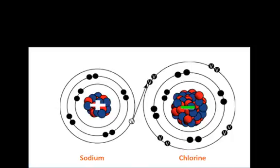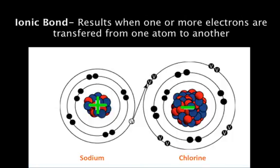Chlorine becomes a negative one ion, while sodium becomes a plus one ion. Because they're opposite in charge, they're attracted to each other, forming what is called an ionic bond. All ionic bonds are formed in such a way.